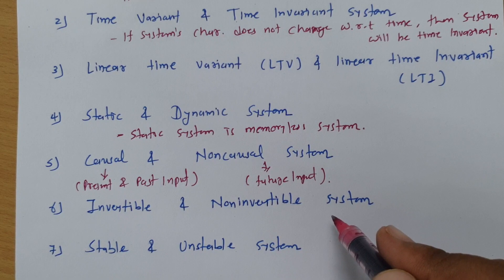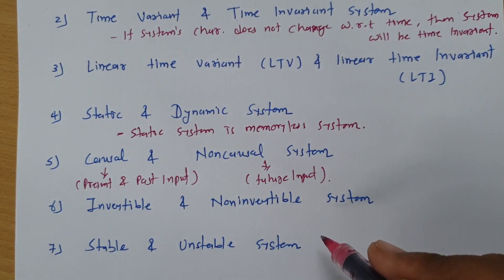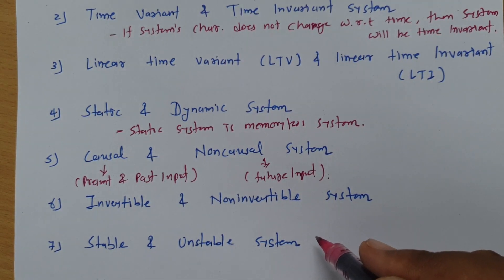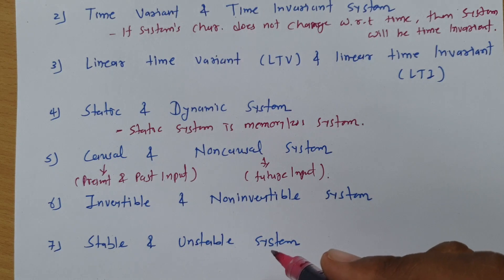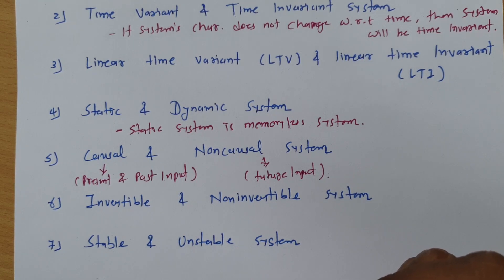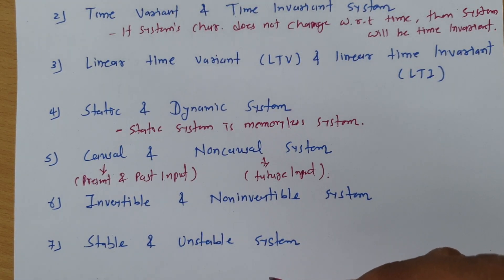Now, invertible and non-invertible systems. If a system's response can be inverted — meaning if you give input x(t) and at the output side you can again achieve x(t) — then one can say that system is invertible. The output should have some components of the input so that one can invert the response. If there is no component of the input at the output side, that will be a non-invertible system.